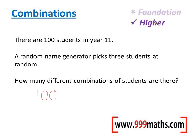Now after we've picked from those 100 students there will be 99 students left to pick the second student from, so we multiply that by 99 — that's how many combinations for 2 students. Then for the third student there will be 98 students left to pick from. Multiplying those together will give us our total number of combinations: 970,200.